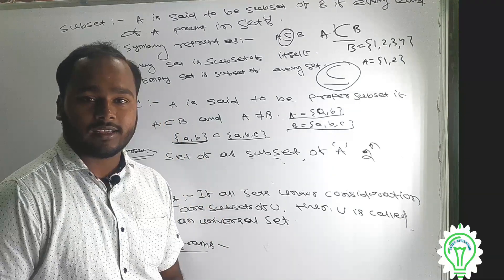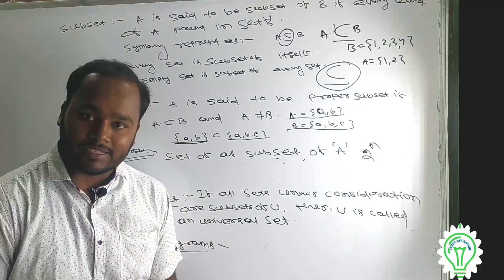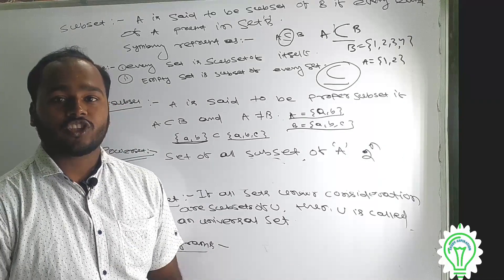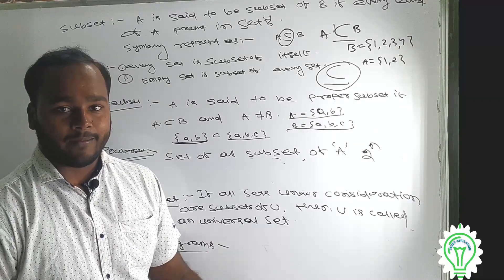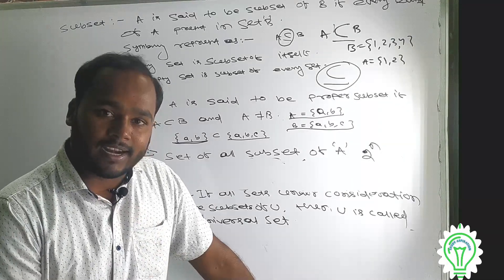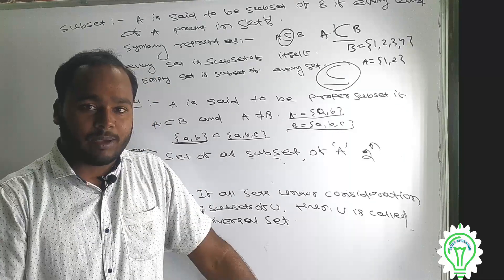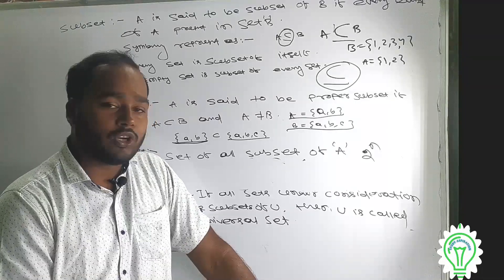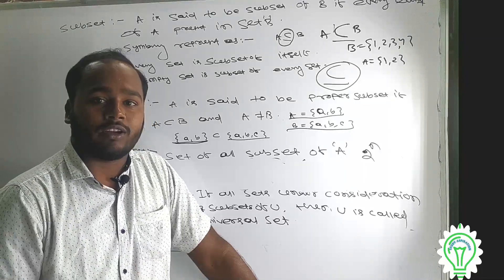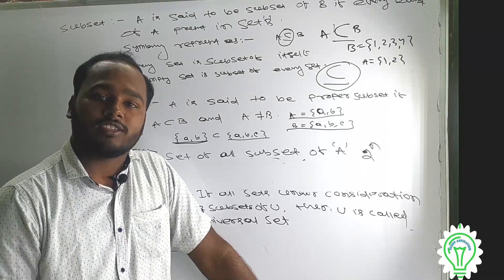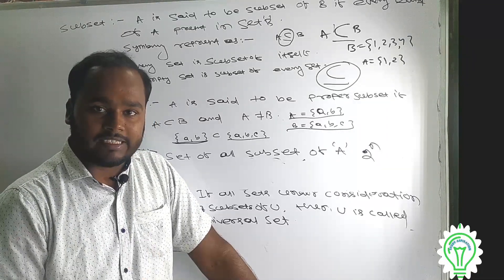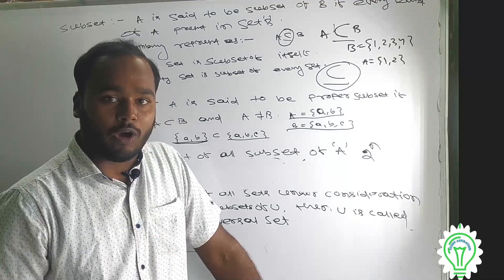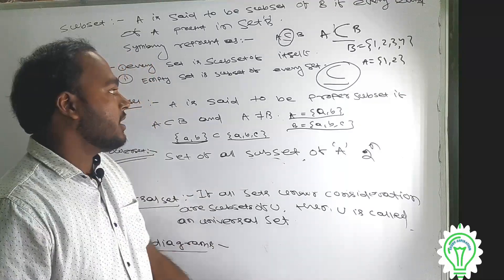Every set is a subset. If we have A as a subset of B, then we will have A as a subset of B. Every set is the subset of itself.